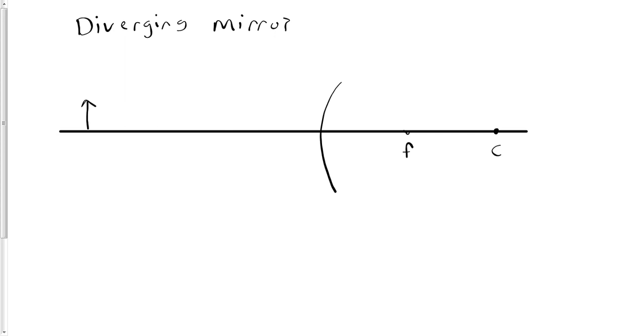How we draw them is not exactly the same, but it's nearly identical. Parallel, but now it's diverging, so it's going to diverge away from the focal point. So instead of converging towards the focal point, it will diverge away. Your virtual ray will again go in the opposite direction as your real one, so it will go through the focal point.